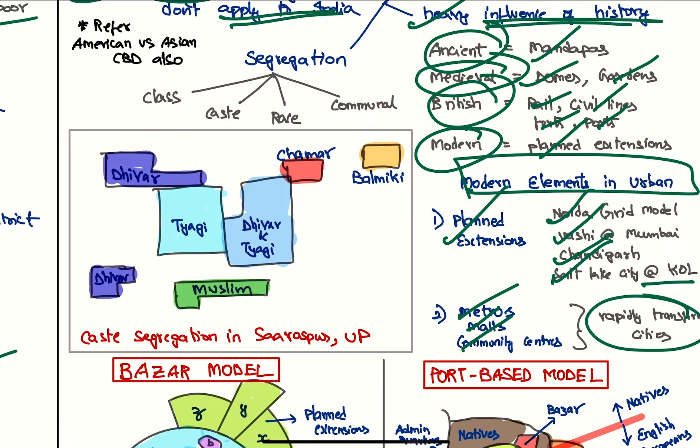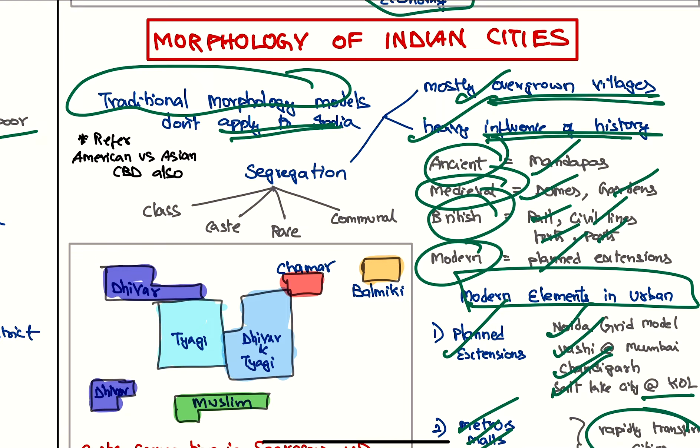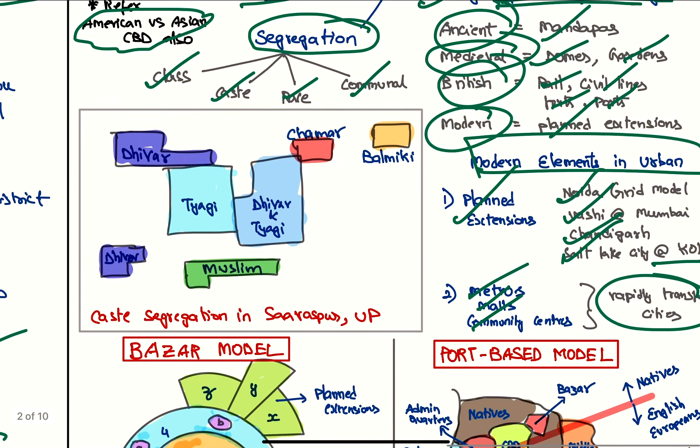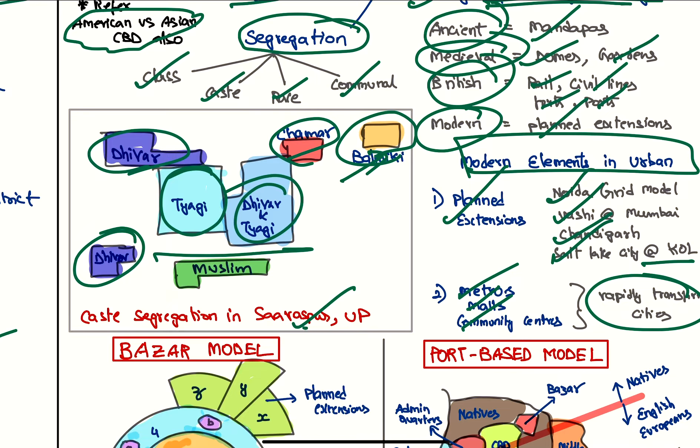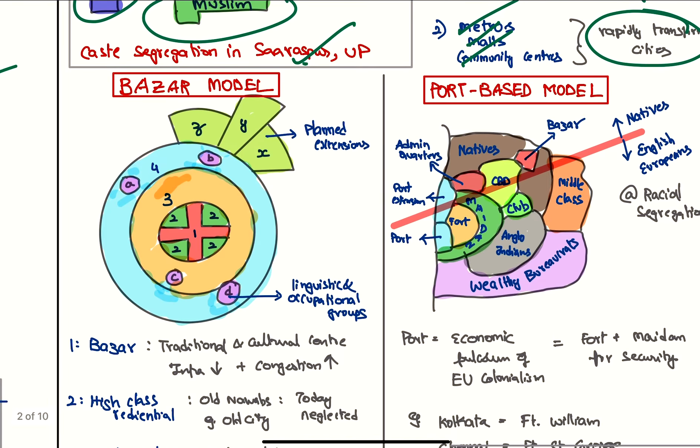Third reason is segregation is seen in terms of class, caste, race, and communal segregation. Also, Asian CBD is much different than American CBD. This is the example of segregation in Saraspur, UP. We have Jatavs living in the center, Dhobis living around here, Valmikis are living far away because they are the lowest caste, Chamars living here, Dhobis and Jatavs here. And communal segregation can be seen with Muslims living in one area. There are two models for India: bazaar model and port-based model.